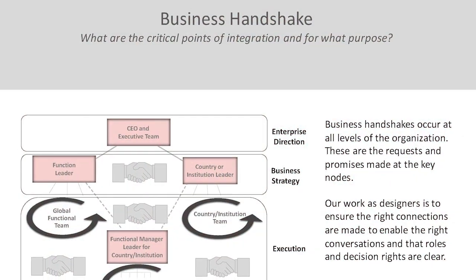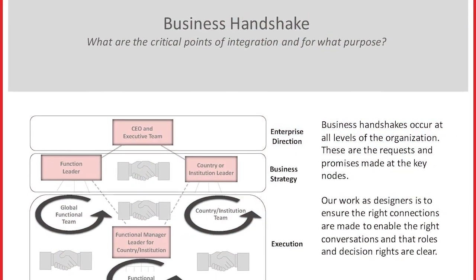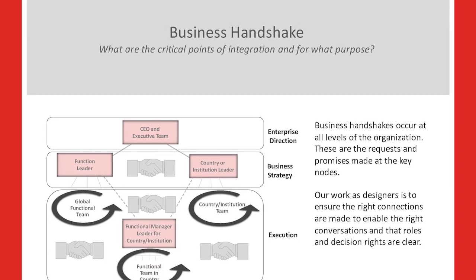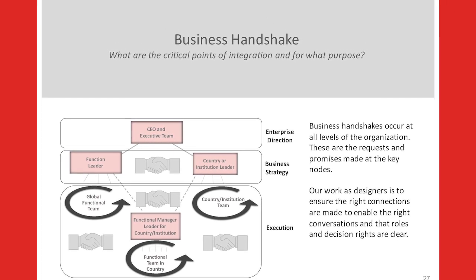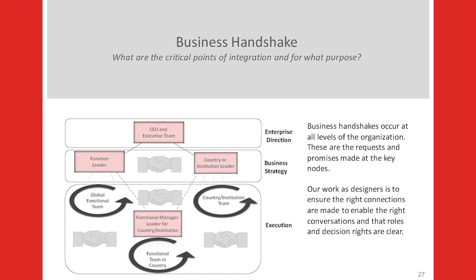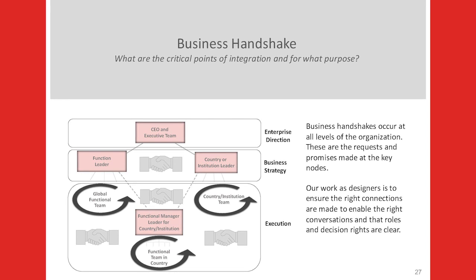Our sixth question and piece of work is really around creating those connections across the structure. No matter how we put the work together, we will create silos and boundaries. Finding the right points of intersection where people need to collaborate is an important part of the design process.